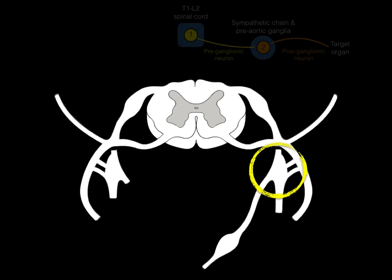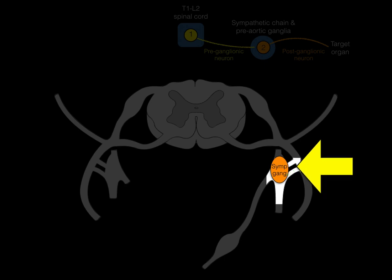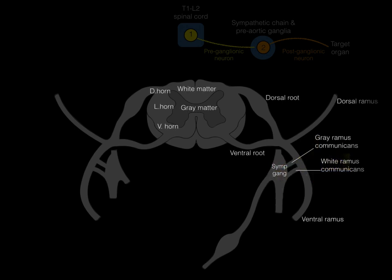Focusing on the sympathetic ganglion shown in orange, the structure called the white ramus communicans carries sympathetics from the ventral ramus into the sympathetic ganglion. The gray ramus communicans carries information from the sympathetic ganglion back out to the ventral ramus. They're called rami communicans because they communicate between the two structures. You can pause here to make sure your illustration is labeled correctly.